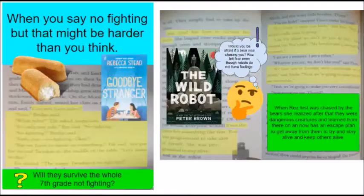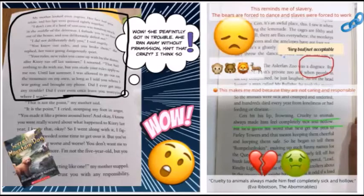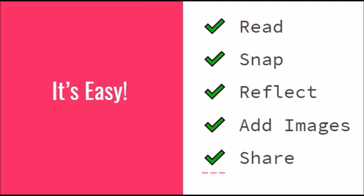Typically, people take a quick snap or screenshot, if the text is digital, of something they are reading. Once it is an image, you add to it with other images, text, and coding symbols. It is easy. Just read, snap, reflect, add stickers or images, and share. So let's get started.